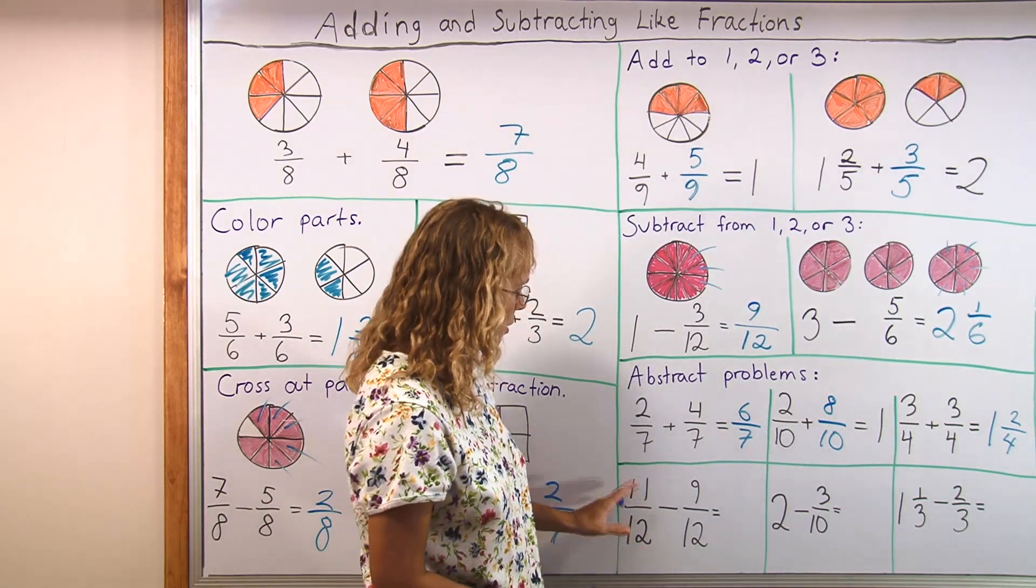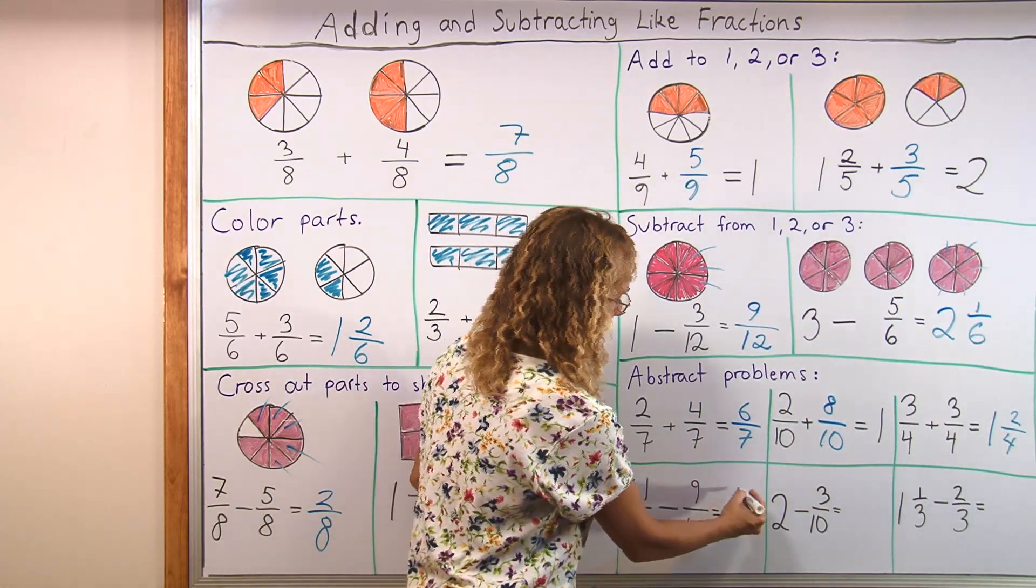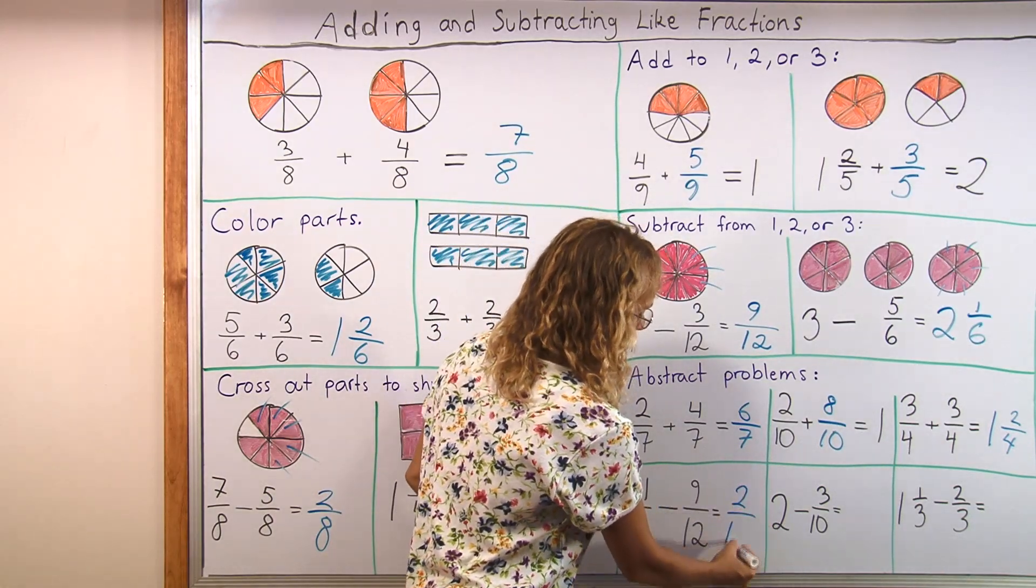And here, this is easy problem. 11 twelfths take away 9 twelfths. 11 slices minus 9 slices is 2 slices and they are still 12th parts.